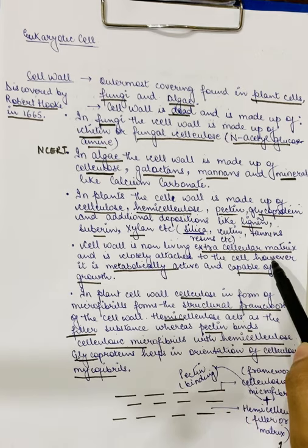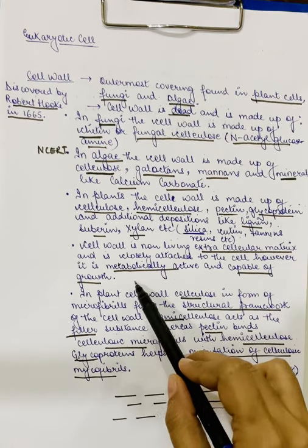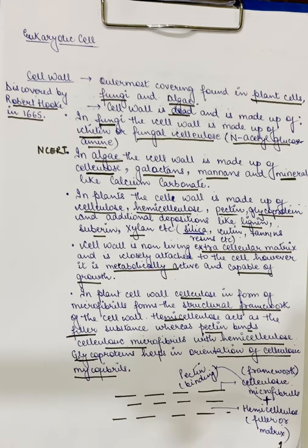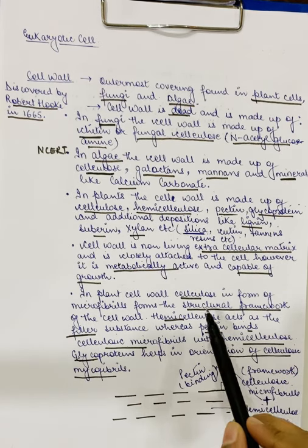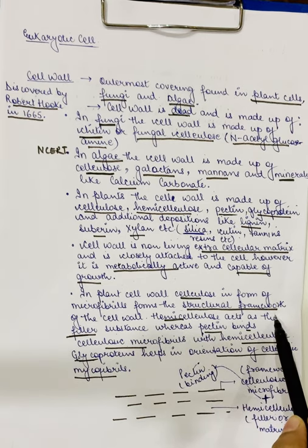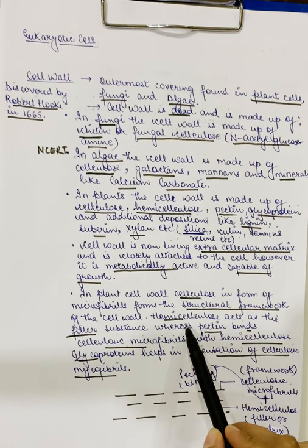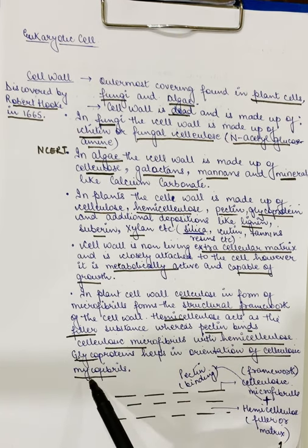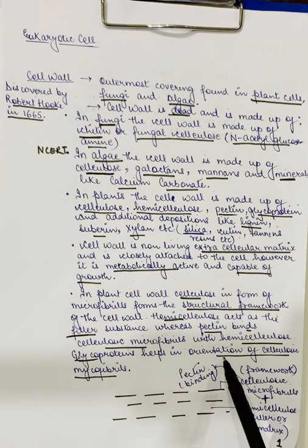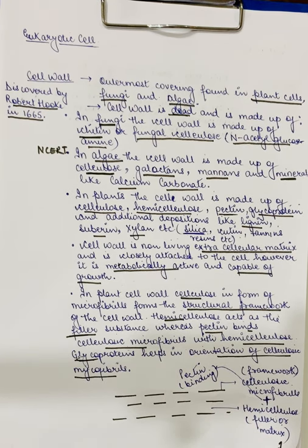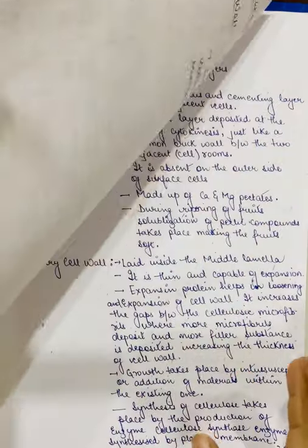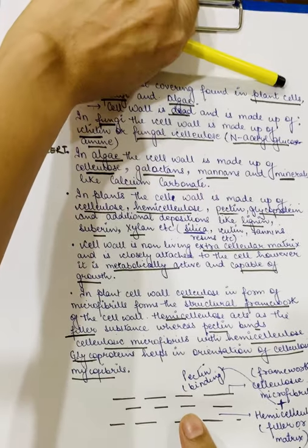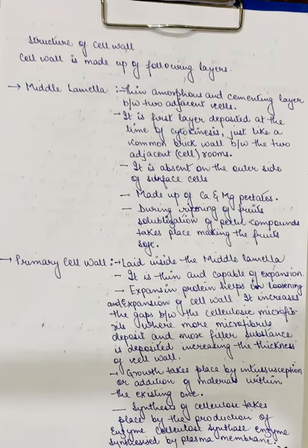The cell wall is part of the extracellular matrix. Though it is dead, it is metabolically active and capable of growth. The plant cell wall's cellulose forms the structural framework; hemicellulose acts as a filler substance; pectin binds the cellulosic microfibrils with the hemicellulose; and glycoproteins help in the orientation of cellulosic microfibrils. Now we will be studying about the different types of cell wall layers.